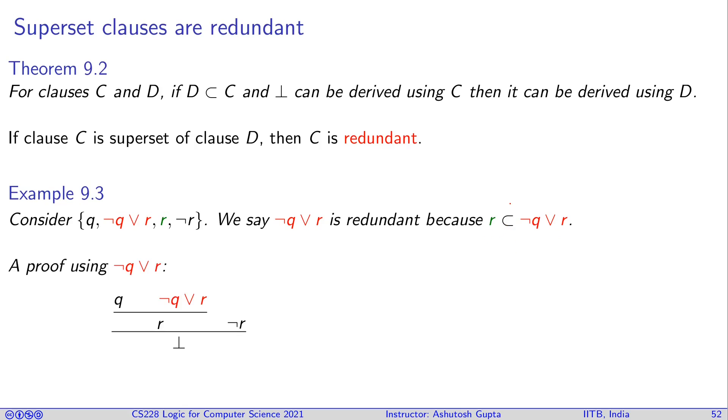Let's see if there is a proof of false using these long clauses. Yes, it is. If you take Q resolve with not Q or R, you resolve these two things, you get R and R and R gives you false.